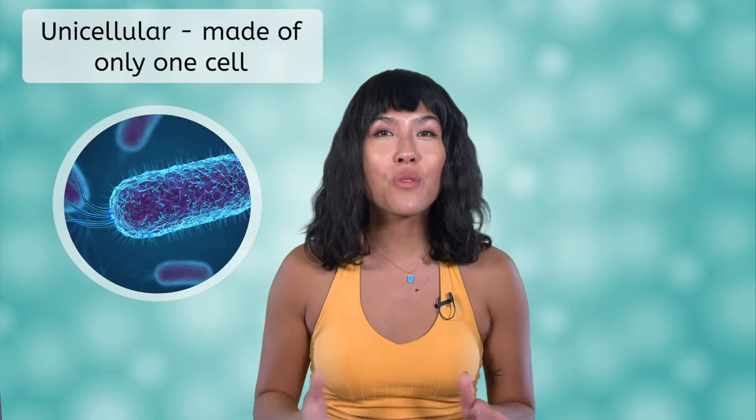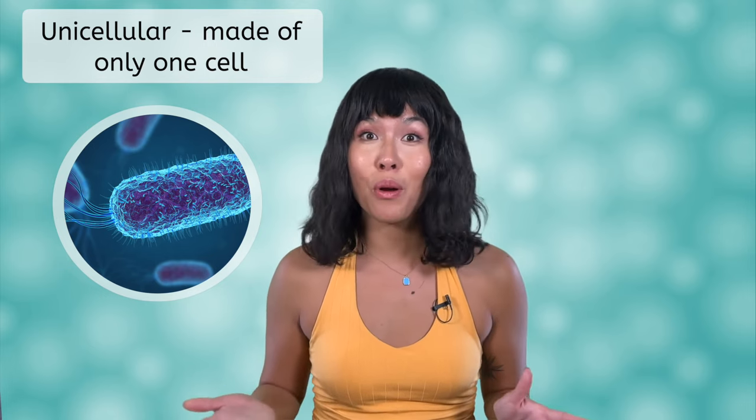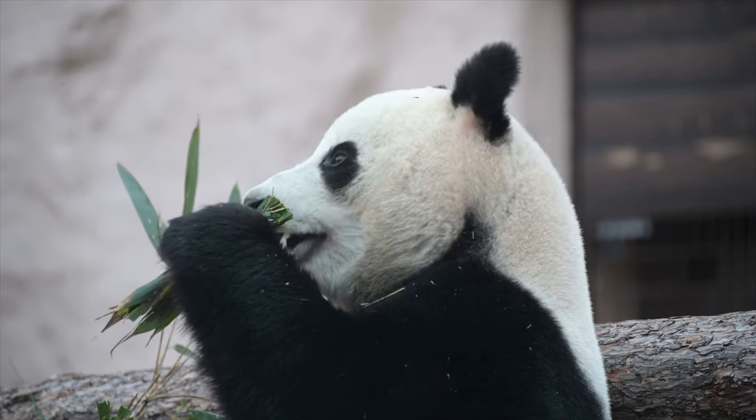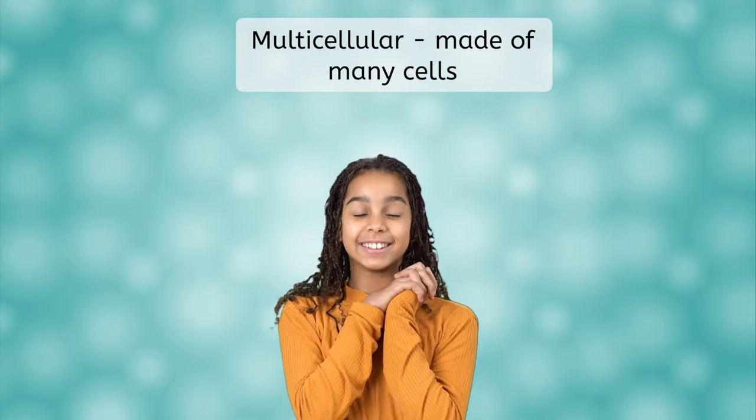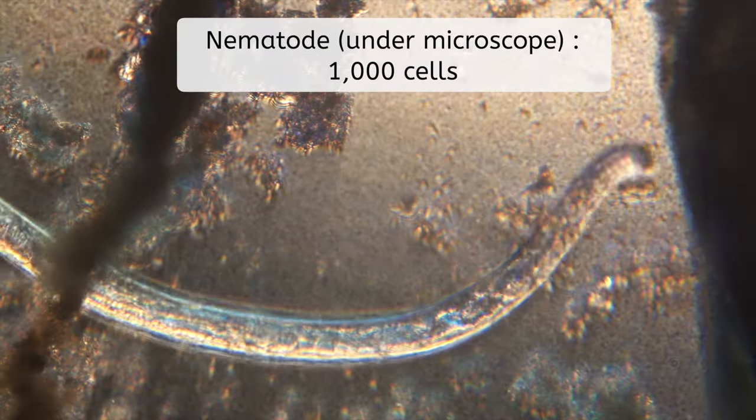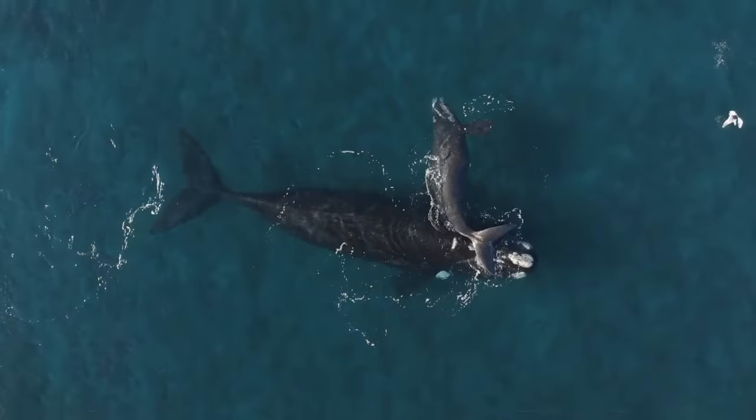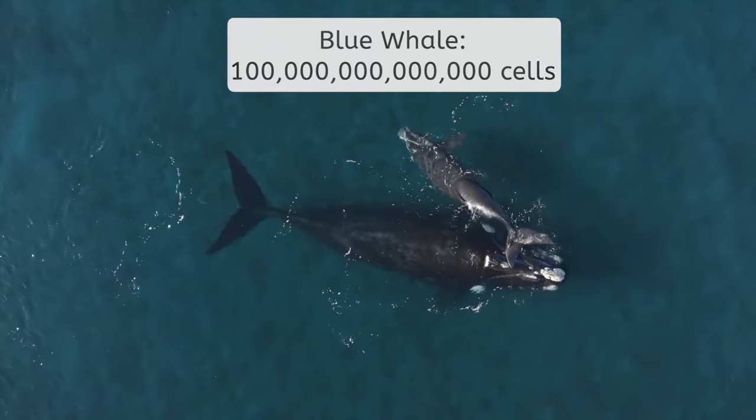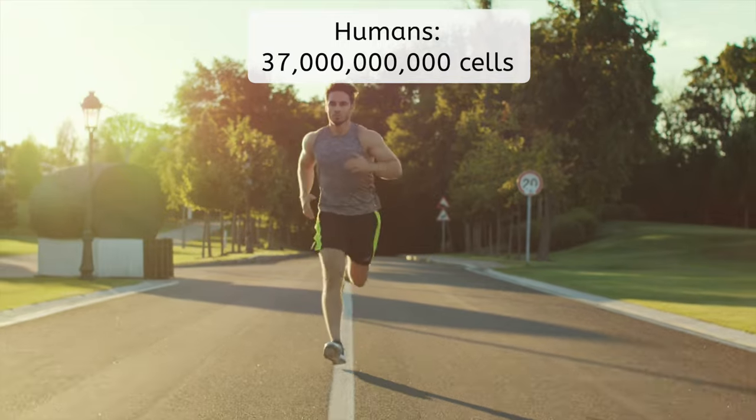They are called unicellular organisms and include bacteria, archaea, and many protists. The organisms you're more likely familiar with, animals, plants, fungi, yourself, are multicellular, meaning they are made of many cells. And in case you were wondering, many can be as few as a thousand, like in the case of the tiny nematode, or as many as one hundred quadrillion in the case of the blue whale. Us humans are somewhere in the middle, containing trillions of cells.